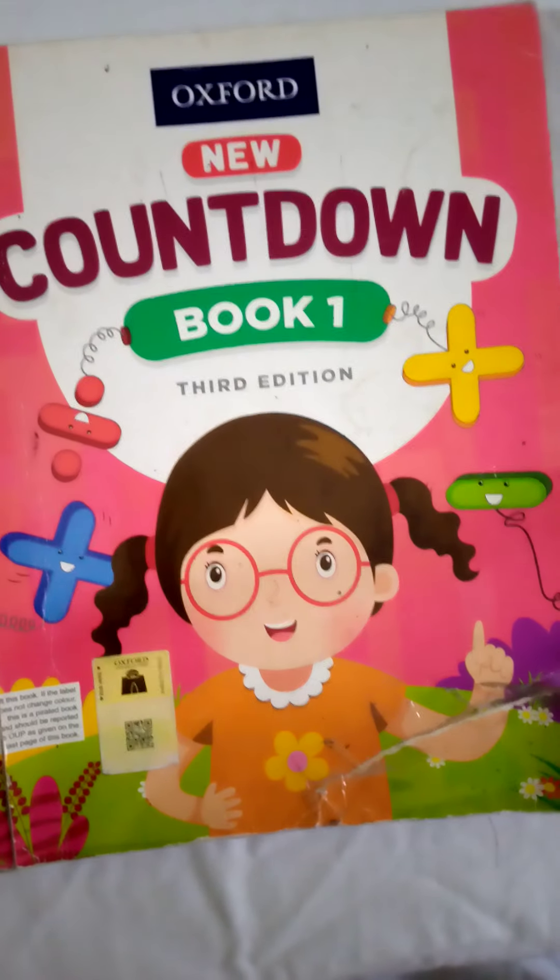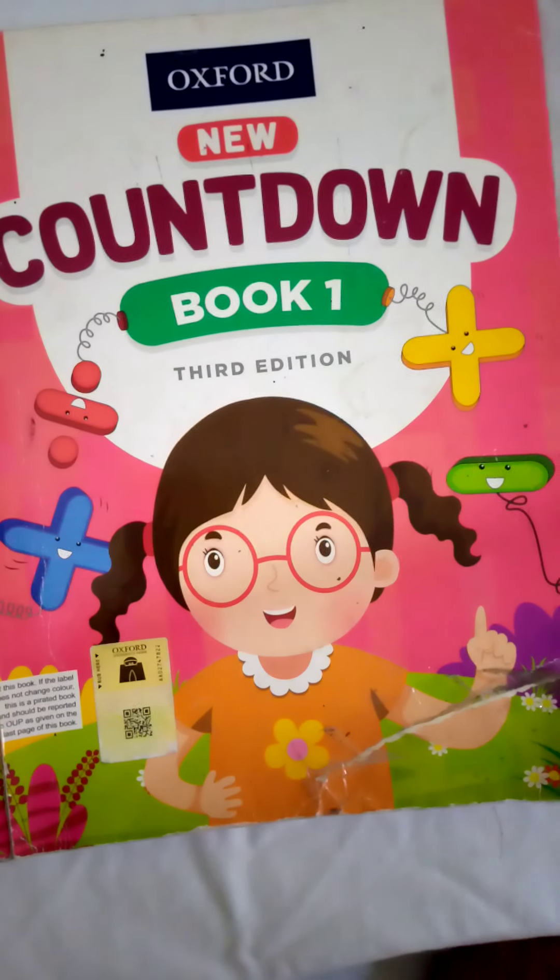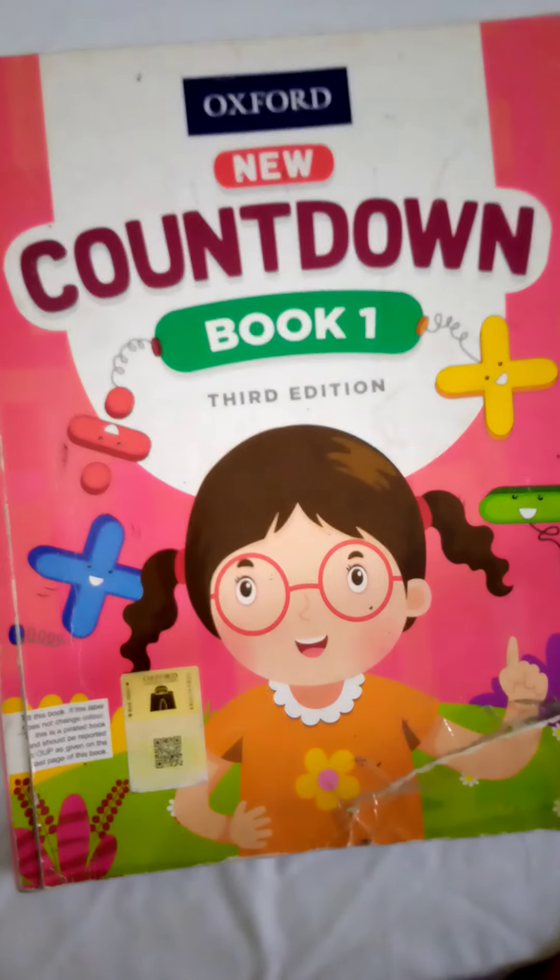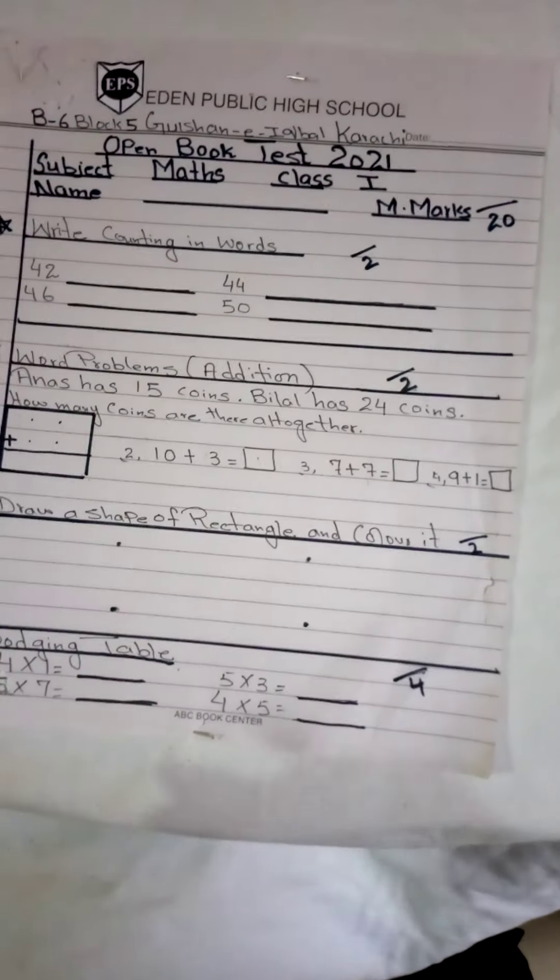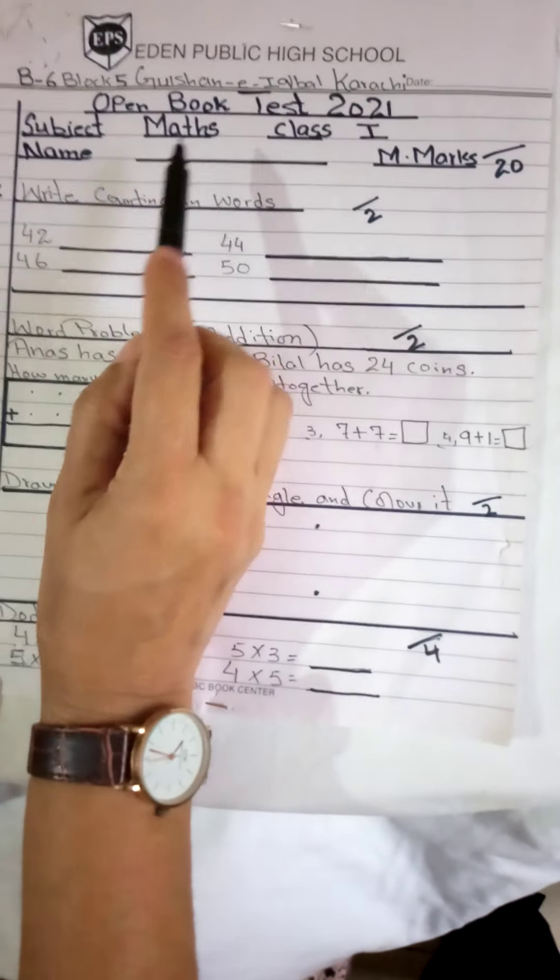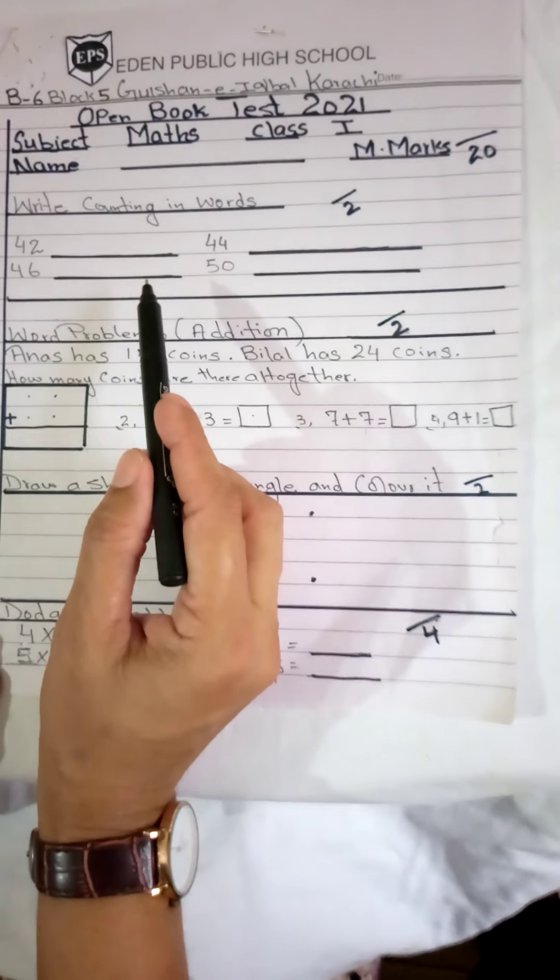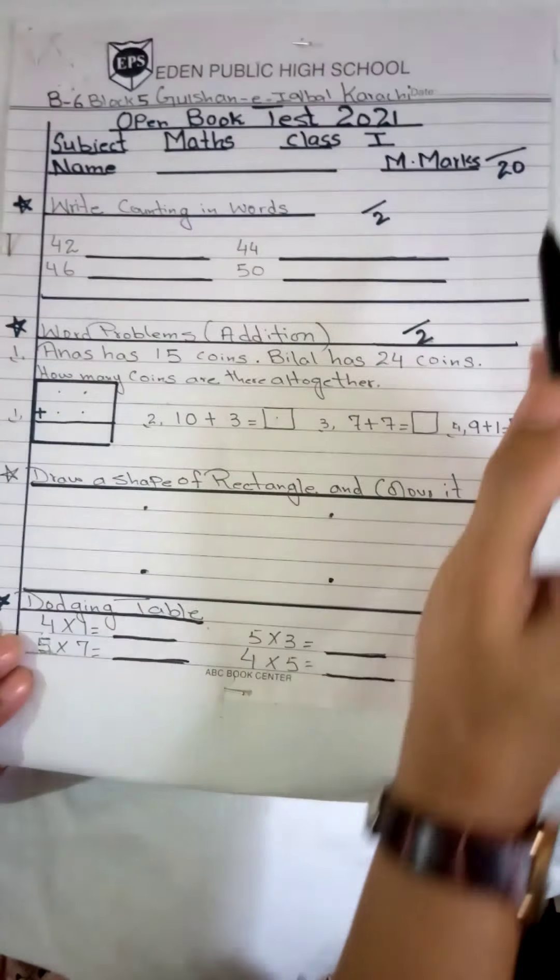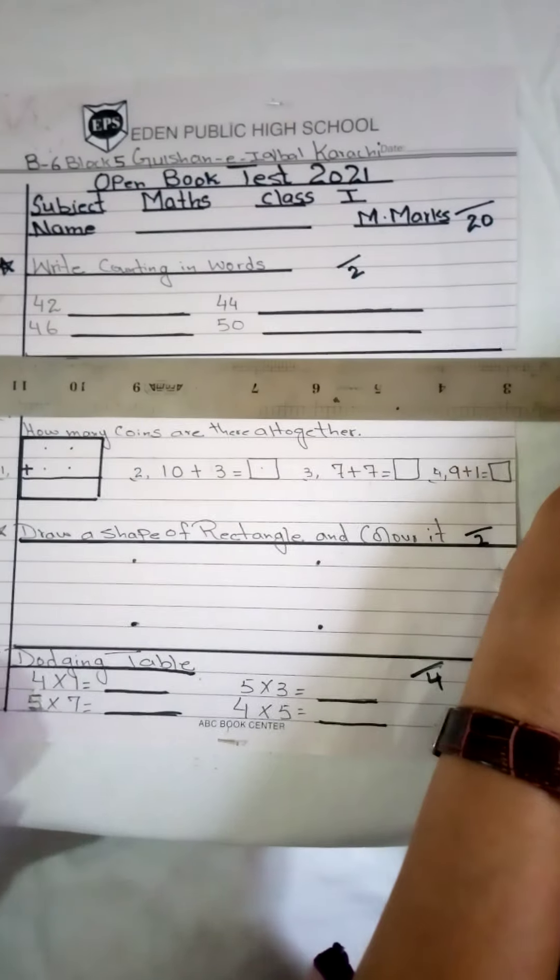Bismillahirrahmanirrahim, Assalamu alaykum students, how are you all? I hope you are all fine. I am your teacher Mr. Mehra, class one. Now students, this is your Maths Countdown book. Today I am giving you an open book test paper, Maths class one. This is your open book test paper. In this paper I've done very selective questions and it's all in revision to provide you practice to make you better prepared for your final preparation. Maximum marks is 20.